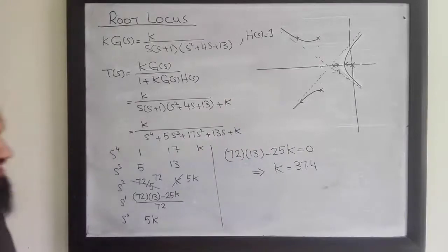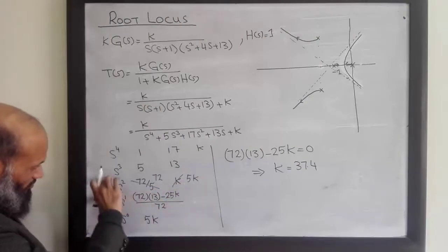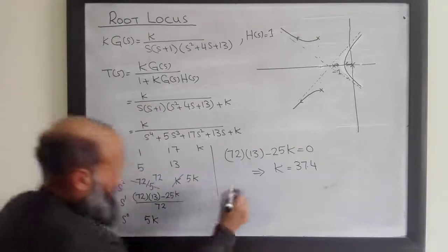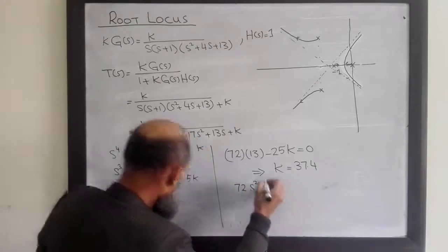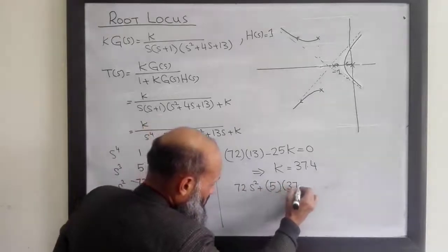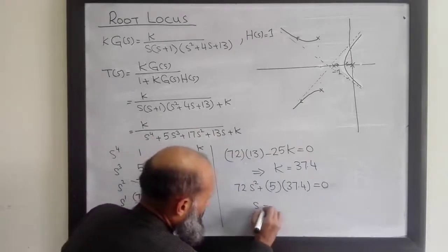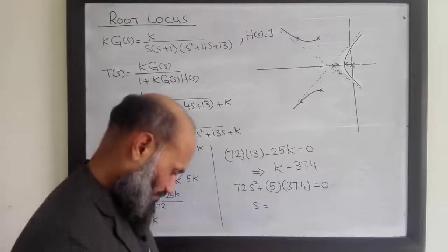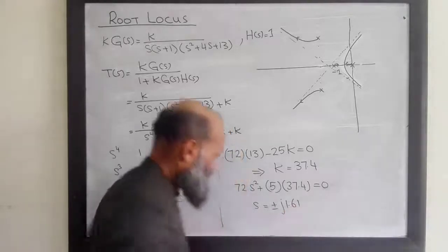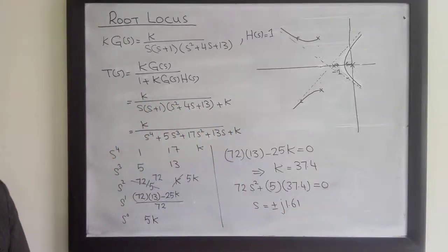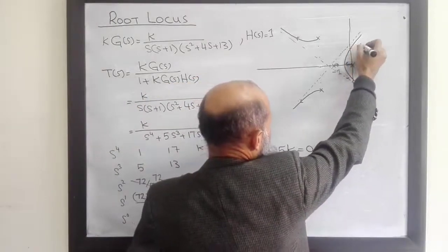Setting 72×13 - 25K = 0 gives K = 37.4. This is the critical gain value at the imaginary axis crossing. Using the auxiliary polynomial 72s² + 5K = 0 with K = 37.4, we solve to find the crossing points at s = ±j1.61. So the root locus crosses the imaginary axis at ±j1.61.